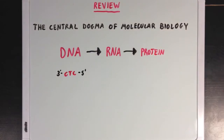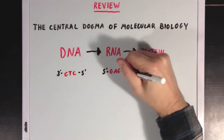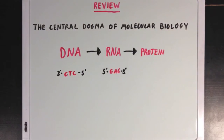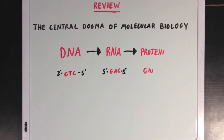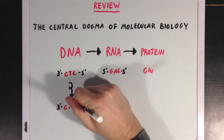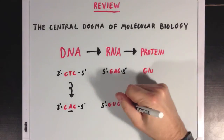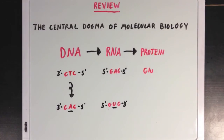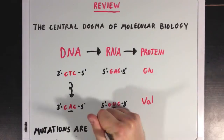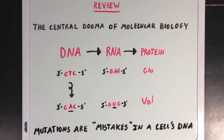Nucleotides from DNA are transcribed to their complementary forms on RNA, which are then read as codons, or groups of three, to code for specific amino acids in a larger protein. If you mutate one of the nucleotides on DNA, like turn this thymine base into an adenine base, then that will affect the RNA sequence and ultimately the protein that follows. Mutations are mistakes in a cell's DNA that ultimately lead to abnormal protein production.